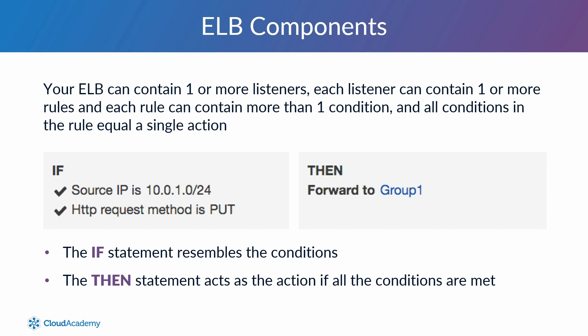For example, if the request came from within the 10.0.1.0/24 network range, which is the first condition, and was trying to carry out an HTTP PUT request, the second condition, then the request would be sent to the target group entitled Group 1, which is the action.